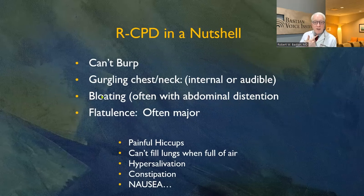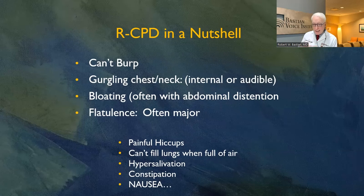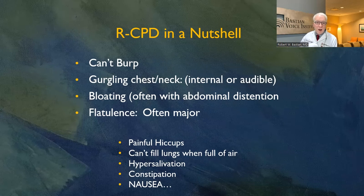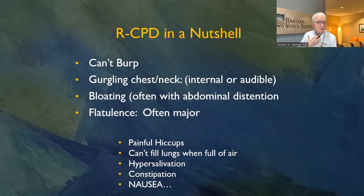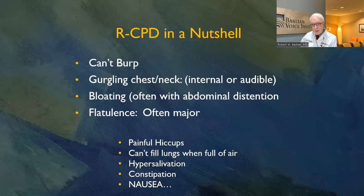What is RCPD? It's a problem with the upper esophageal sphincter that won't let go to let you burp or vomit. The big four symptoms are: can't burp; gurgling — which can be internal or audible, sometimes across a large room, and can be quite embarrassing; bloating, that feeling of being distended and overfull, primarily abdominal, with possible pressure in the chest and neck as well; and flatulence, which can be major.